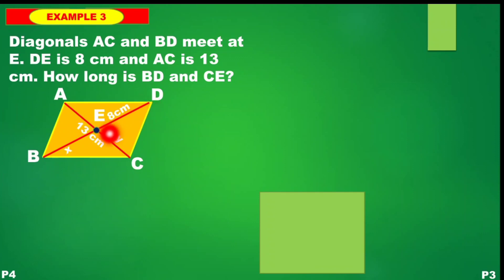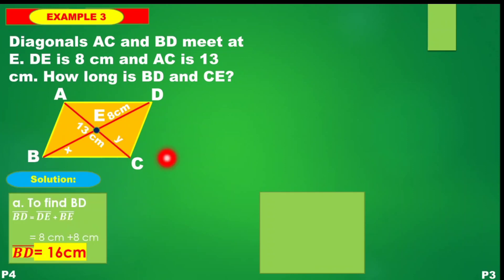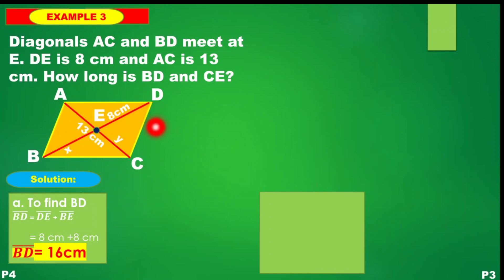Segment CE is represented by Y. To solve, BD equals the length of DE plus the length of BE. Knowing that these two are congruent — from property number 4 — if segment DE is 8 cm, then X is also equal to 8 cm.